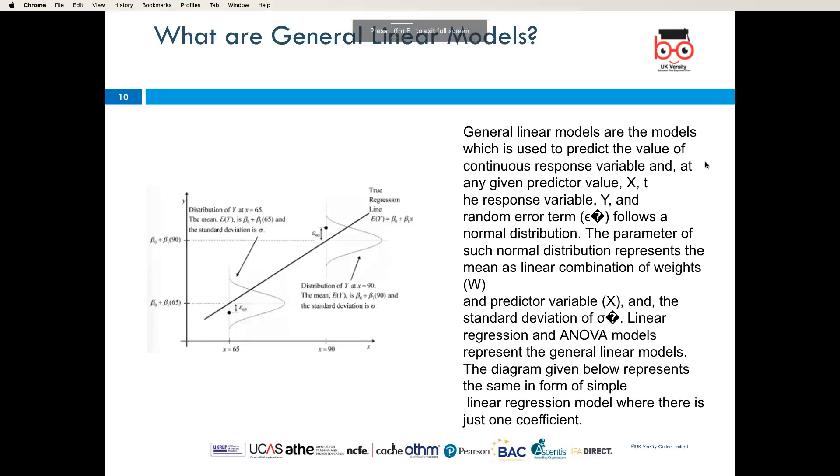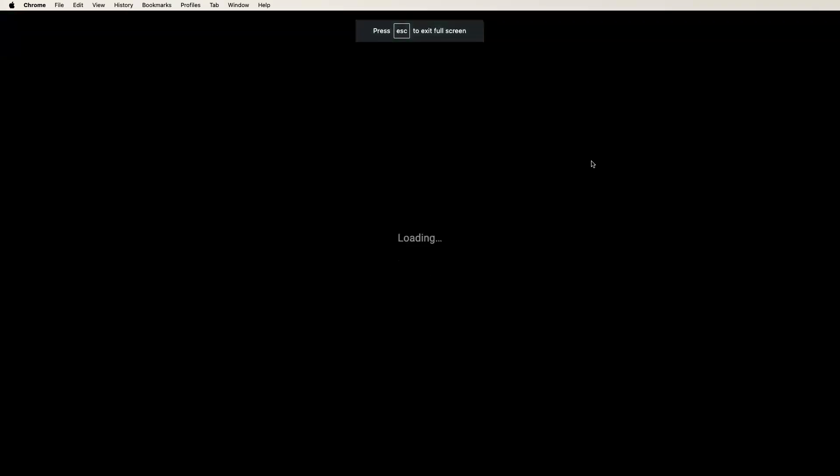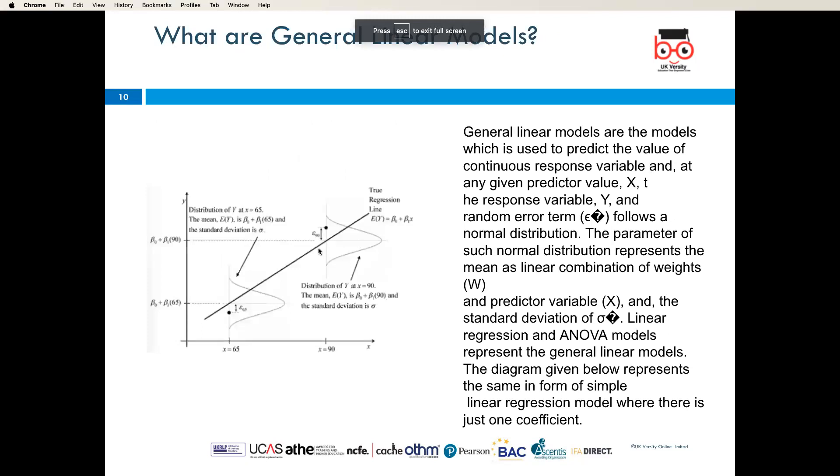What are generalized linear models? General linear models are models which are used to predict the value of continuous response variables. At any given predictor value X_T, the response variable Y and random error term follows a normal distribution.